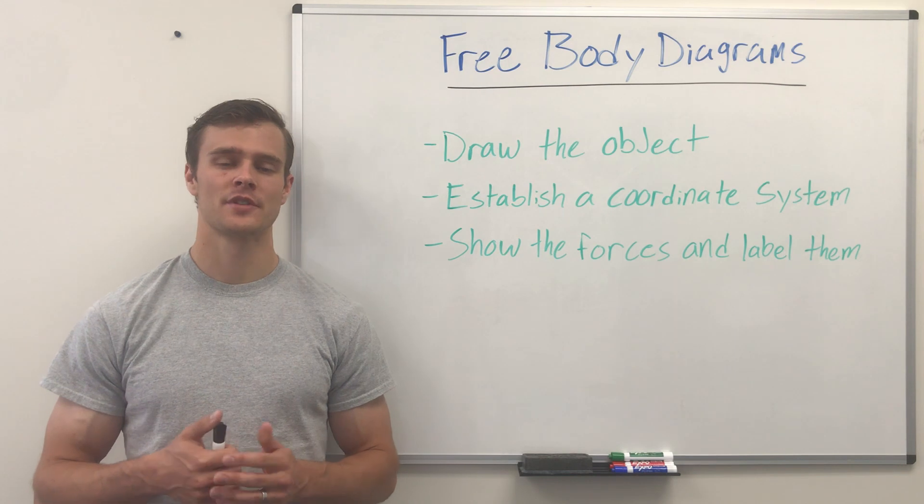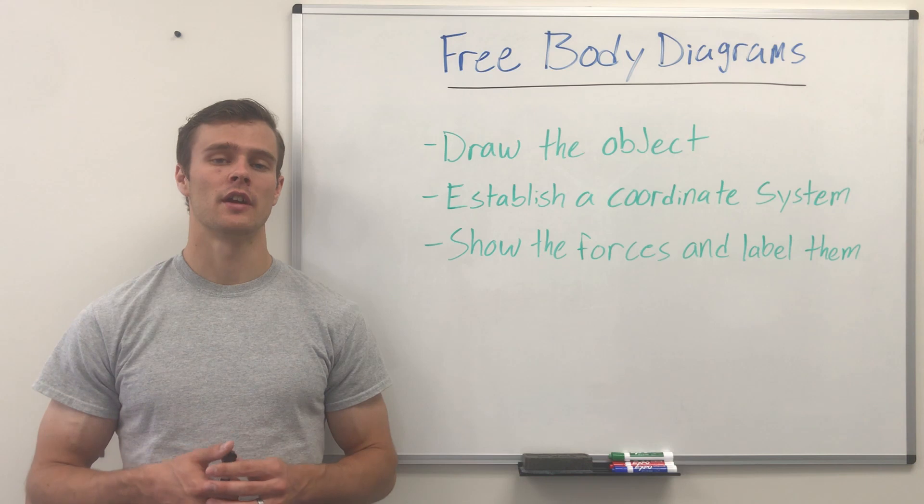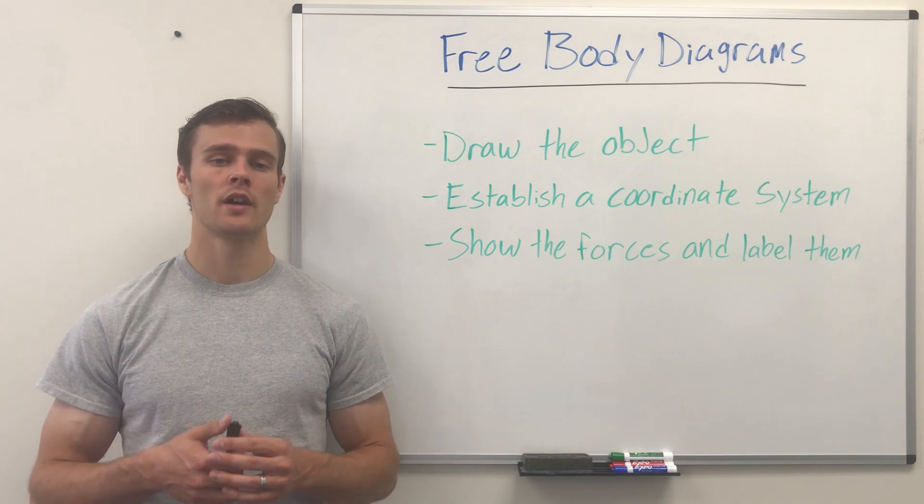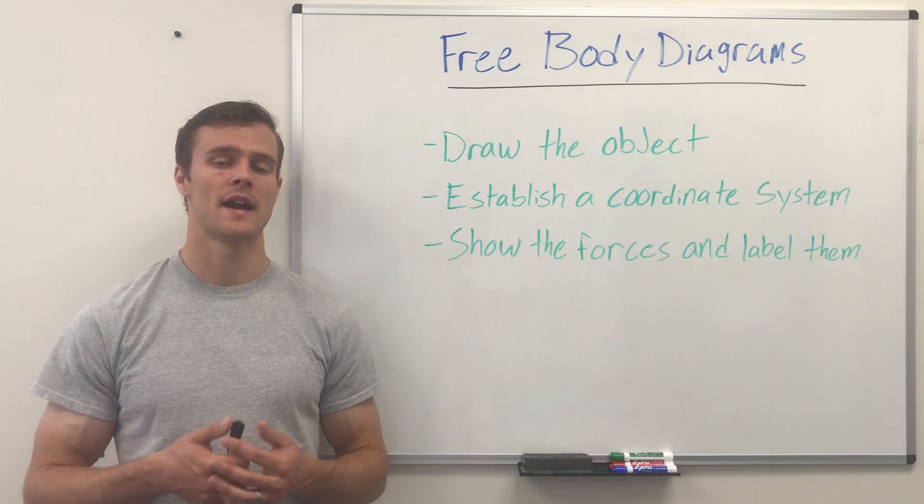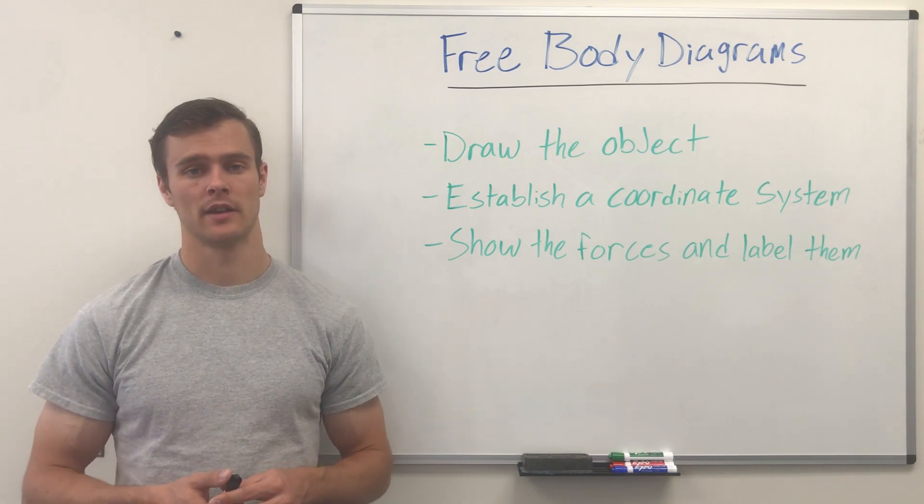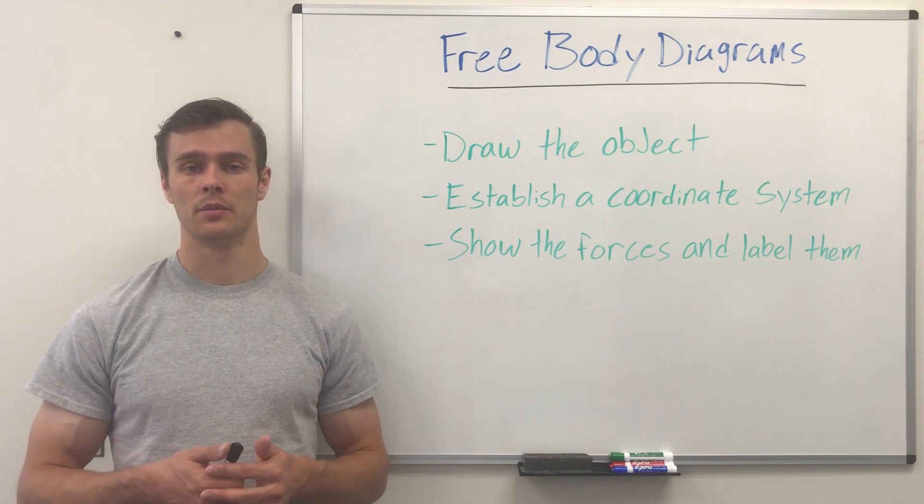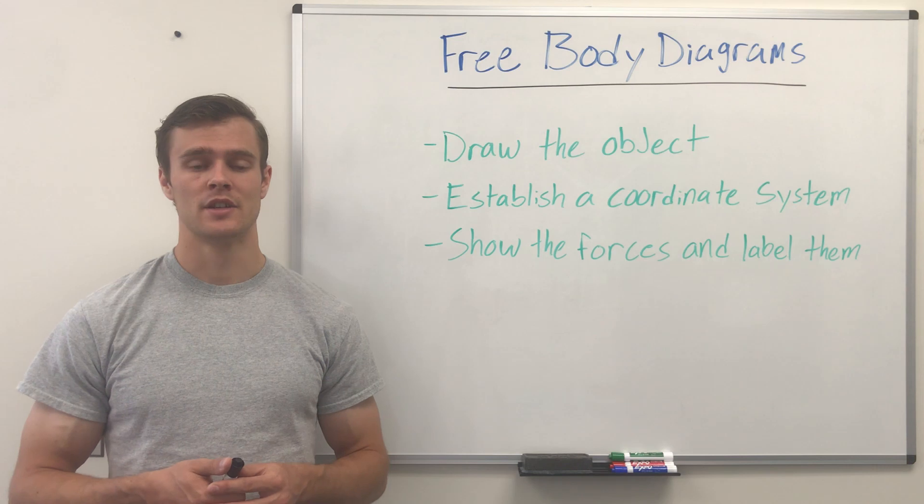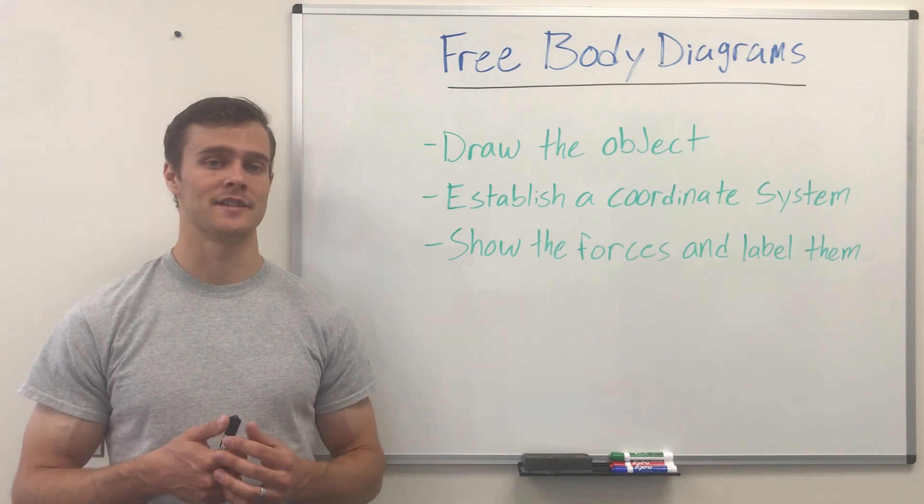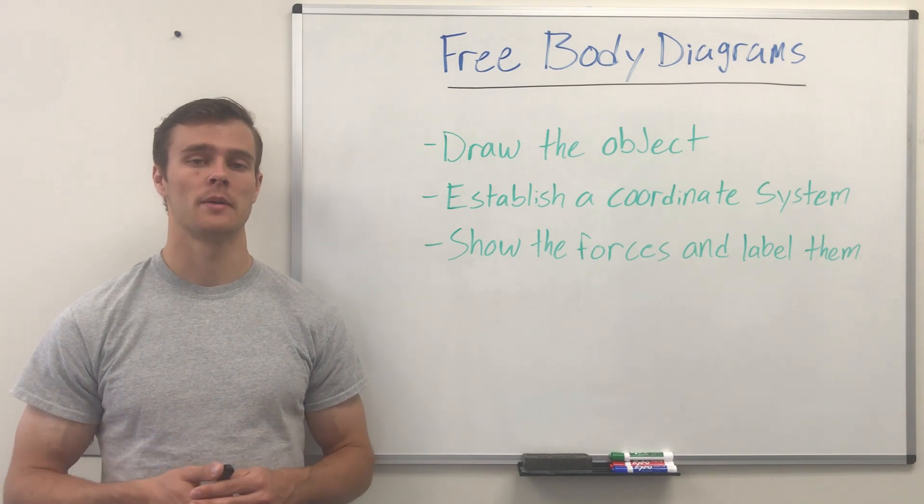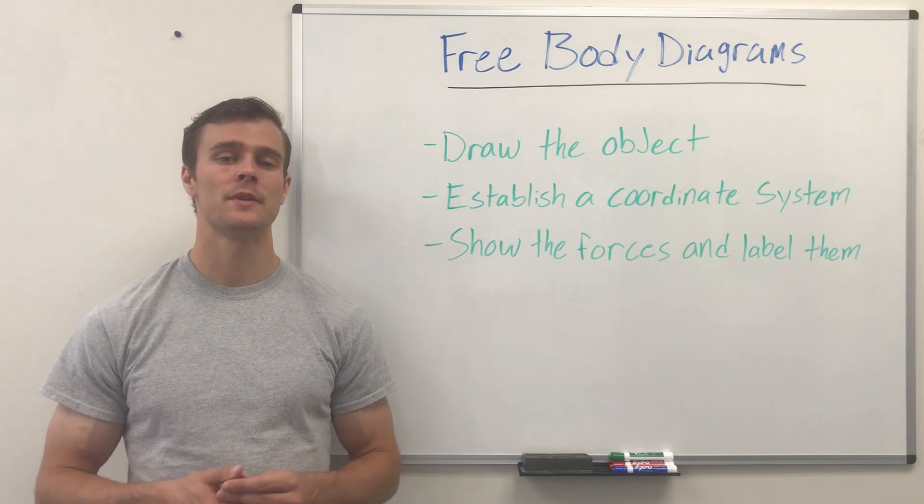So something we need to understand when we're dealing with free body diagrams and especially with earlier engineering is that we're not going to represent ropes, cords and cables as having mass because their mass is often insignificant. We also need to understand that their tension throughout the whole rope or cable is the same, so at one end it's going to be the same at the other. And that's because it also doesn't stretch, so we're not going to worry about the rope or the cable changing length because of stretching.